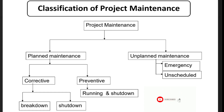The classification of maintenance — maintenance is mainly divided into two types: planned maintenance and unplanned maintenance. Under planned maintenance, there are corrective maintenance and preventive maintenance. Corrective maintenance is further divided into breakdown maintenance and shutdown maintenance. Preventive maintenance is also divided into running maintenance and shutdown maintenance. Unplanned maintenance has two types: emergency maintenance and on-saddle maintenance.